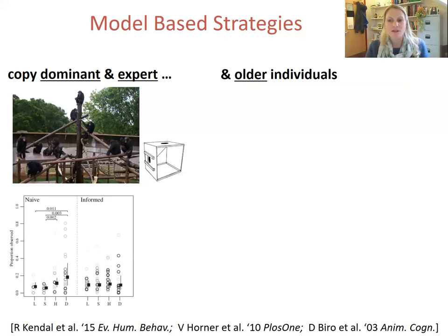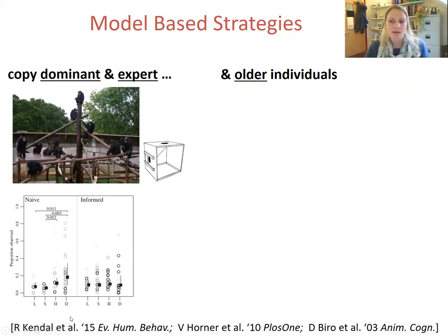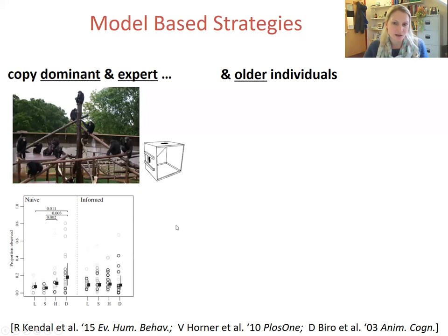We found greater observation of individuals of higher rank versus the same or lower rank as the observer, and also a strong effect of most observation of the trained demonstrators — indicated by D for demonstrator. These biases in observation were much stronger for task-naive individuals who hadn't performed the task before, compared to informed individuals who had at least one success. It seems that chimpanzees observe those most likely to provide good information — either those who have gained high status or individuals who appear to know what they are doing, perhaps due to their purposeful movements at the task.